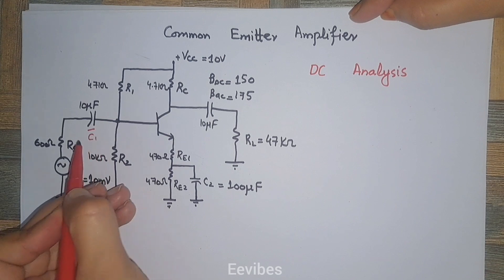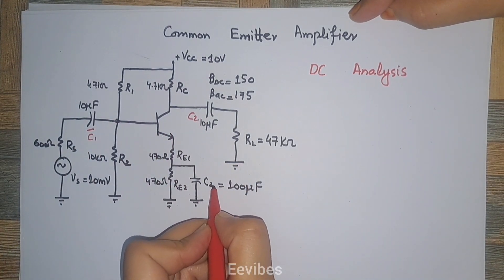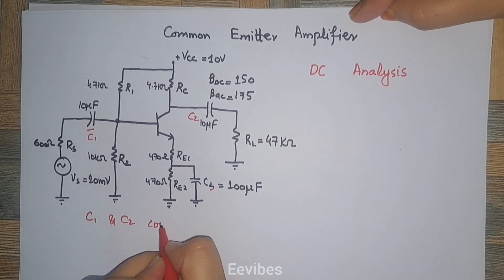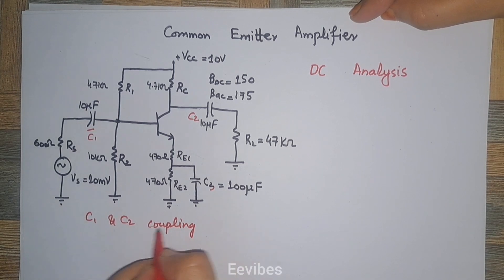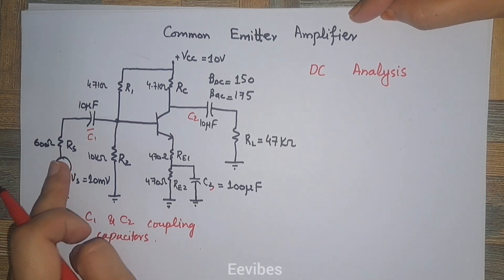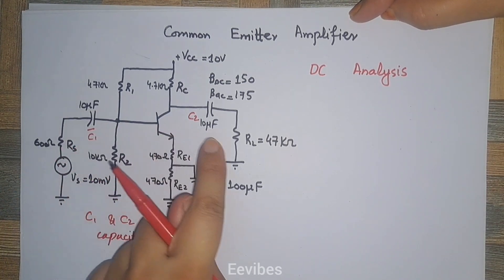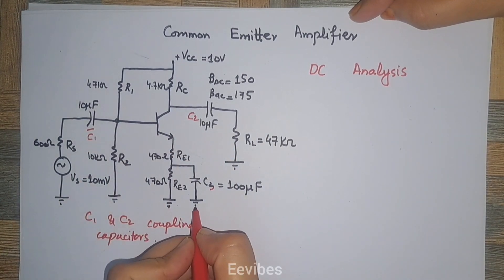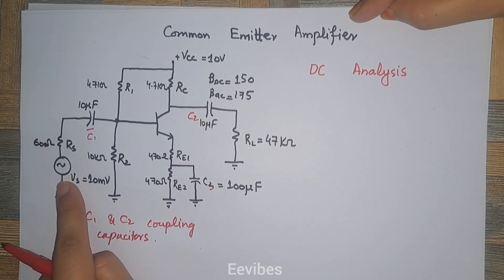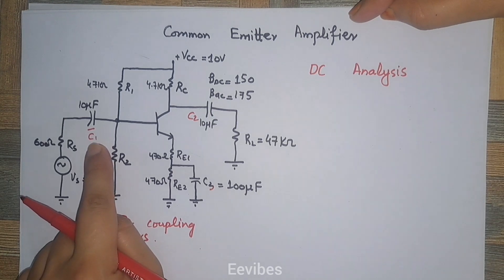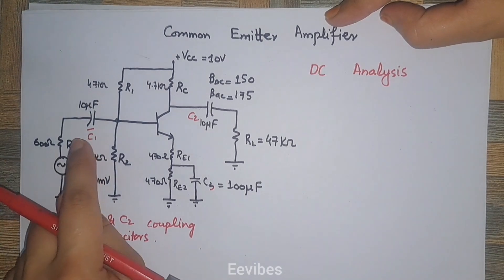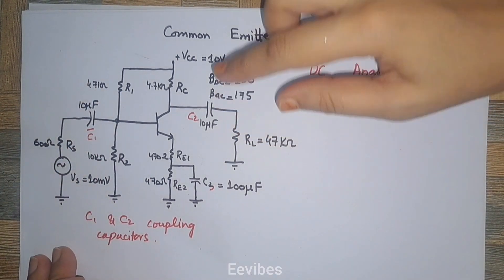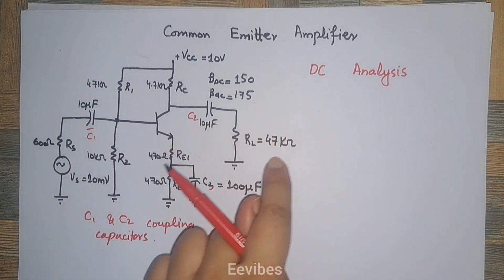These capacitors are labeled C1, C2, and C3. When we replace C2 with an open circuit, the load gets disconnected. Similarly, replacing the other capacitors with open circuits gives us the simplified circuit for DC analysis.